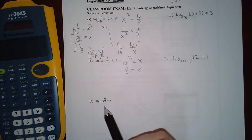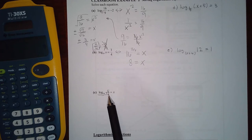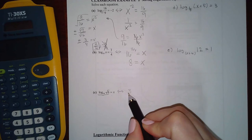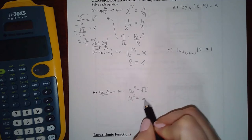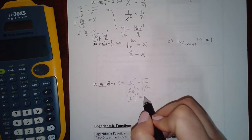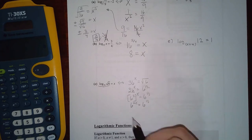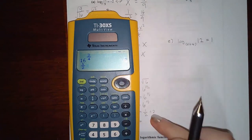This one we can solve by switching forms. 36 is the base, and the power x equals √6. Remember that a square root can be written as 6^(1/2), and since 36 = 6², I write 6² raised to the x. Multiply the exponents: 2x = 1/2. Since the bases are the same, the exponents must be equal, so divide by 2 to get x = 1/4.